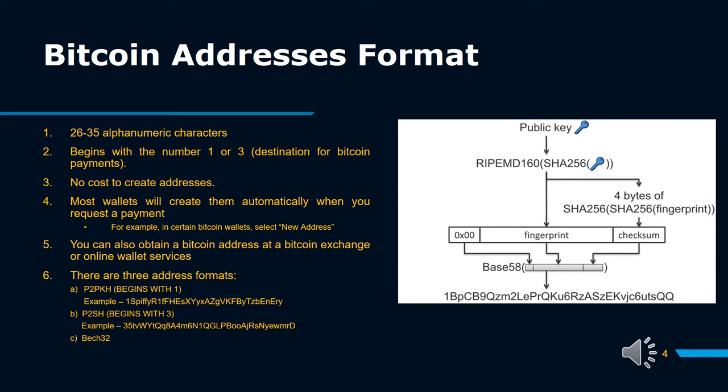You can also obtain a Bitcoin address at a Bitcoin exchange or online wallet services. There are three address formats. A: P2PKH, begins with 1. P2PKH, Pay-to-Public-Key-Hash, is the Legacy Address Format. P2PKH is one of the oldest Bitcoin addresses and is still a legacy format used in the crypto world. Though it is not SegWit-compatible, users can still send Bitcoins to other SegWit addresses. Transactions with P2PKH are slightly costlier than other SegWit addresses because these addresses are longer and take bigger space.